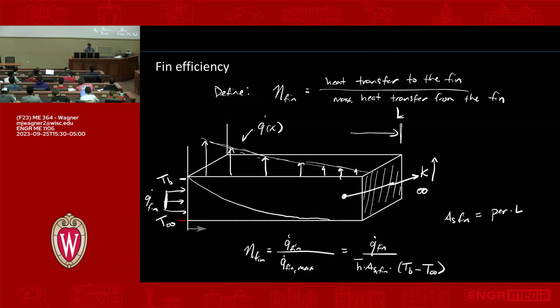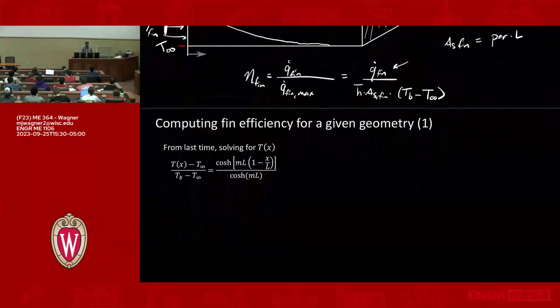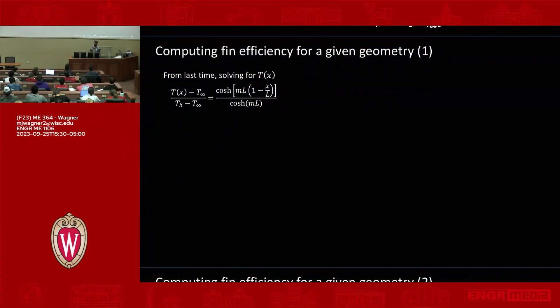Then the question remains, what about this q.fin? How do we evaluate that? Well, we'll get to that. For now, this is the definition of fin efficiency. Any questions on this concept? So let's figure out how you actually compute fin efficiency. So we went through and developed this temperature expression. This was the solution for temperature normalized. We just did that. So let's start from that point and then figure out how you actually compute fin efficiency. So again, let's say q.fin is the first thing we need. We need q.fin. We need q.fin max, right?